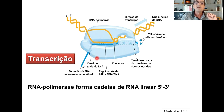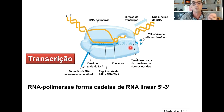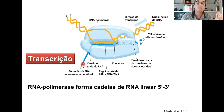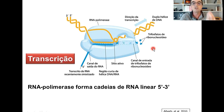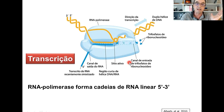A fita que serve de molde receberá, através da RNA polimerase, nucleotídeos individuais de RNA — ribonucleotídeos — que serão incorporados um a um de forma complementar ao molde de DNA. A fita de RNA vai crescendo de sua extremidade inicial 5' para a sua extremidade terminal 3', sempre nesse sentido, também de maneira antiparalela à fita molde. Ou seja, na ponta onde o RNA tem sua extremidade 5', a fita molde estaria com a extremidade 3', continuando sua relação antiparalela.